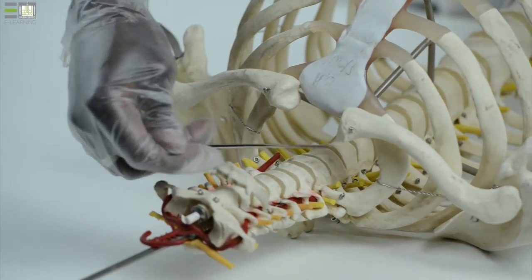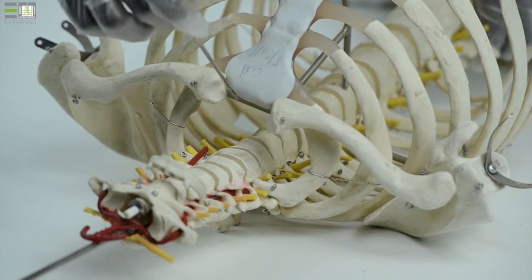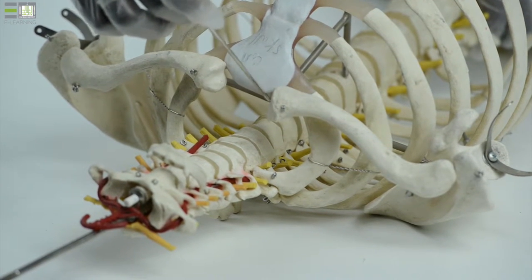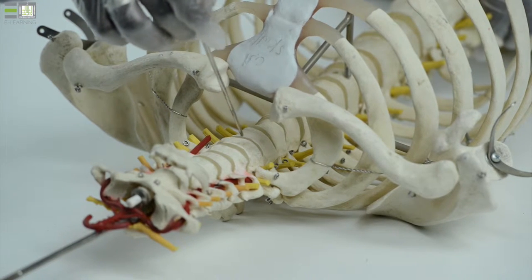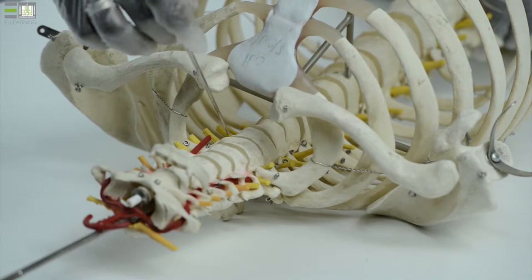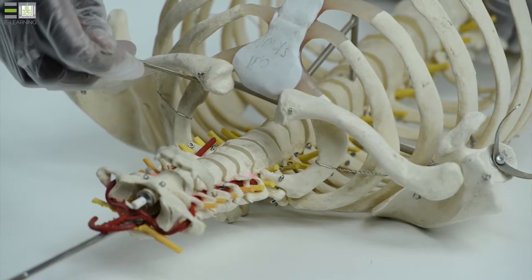The superior aperture is bounded by the upper edge of the manubrium sterni anteriorly, the anterior border of the body of the first thoracic vertebra, and the first rib and its costal cartilages on both sides.